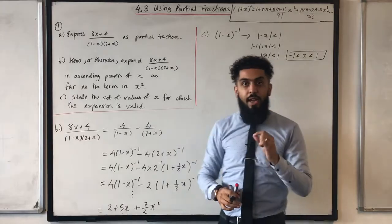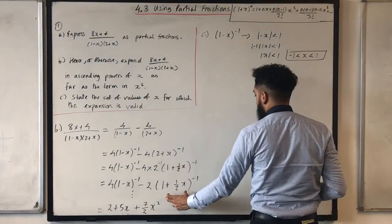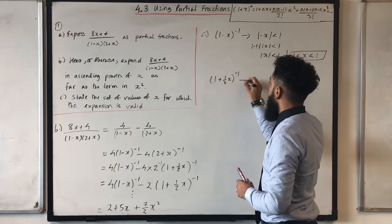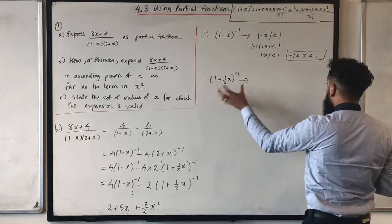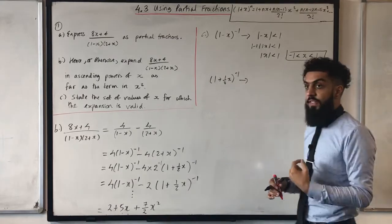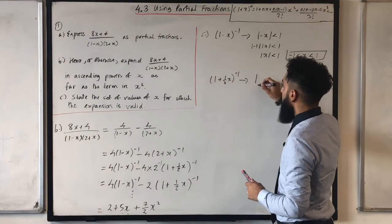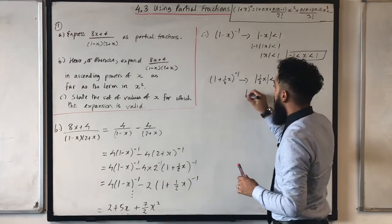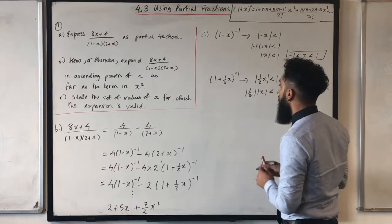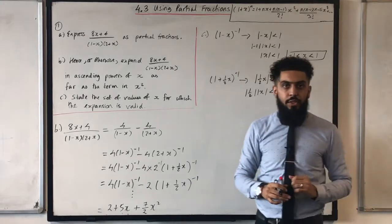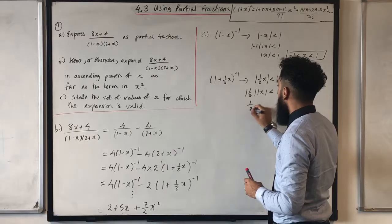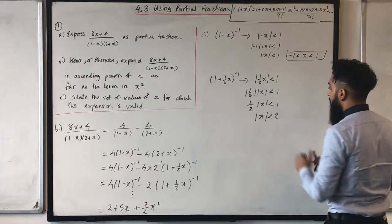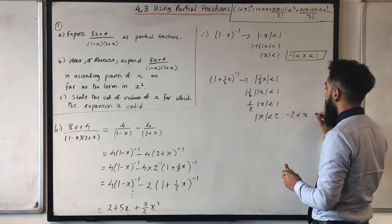The second binomial I expanded was (1 plus one-half x) to the power minus 1, which is valid when mod(one-half x) is less than 1. Splitting the modulus: mod(one-half) times mod(x) is less than 1, so one-half times mod(x) is less than 1, giving mod(x) less than 2. That can be written as minus 2 less than x less than 2.